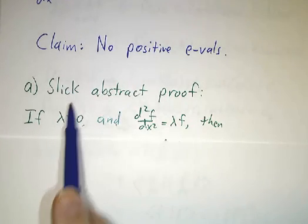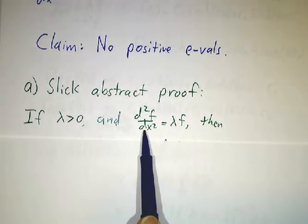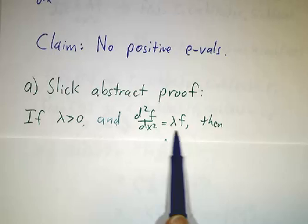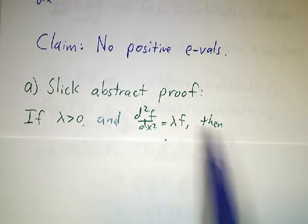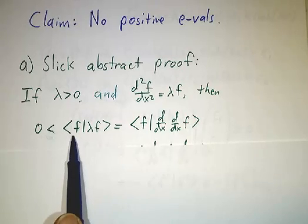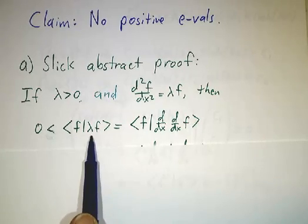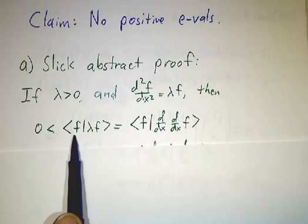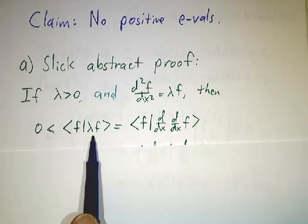So let's suppose that you had a positive eigenvalue, so the second derivative of f was a positive multiple of f. Then 0 would be less than the inner product of f with λf, because this is just λ times the inner product of f with itself, and λ is positive.